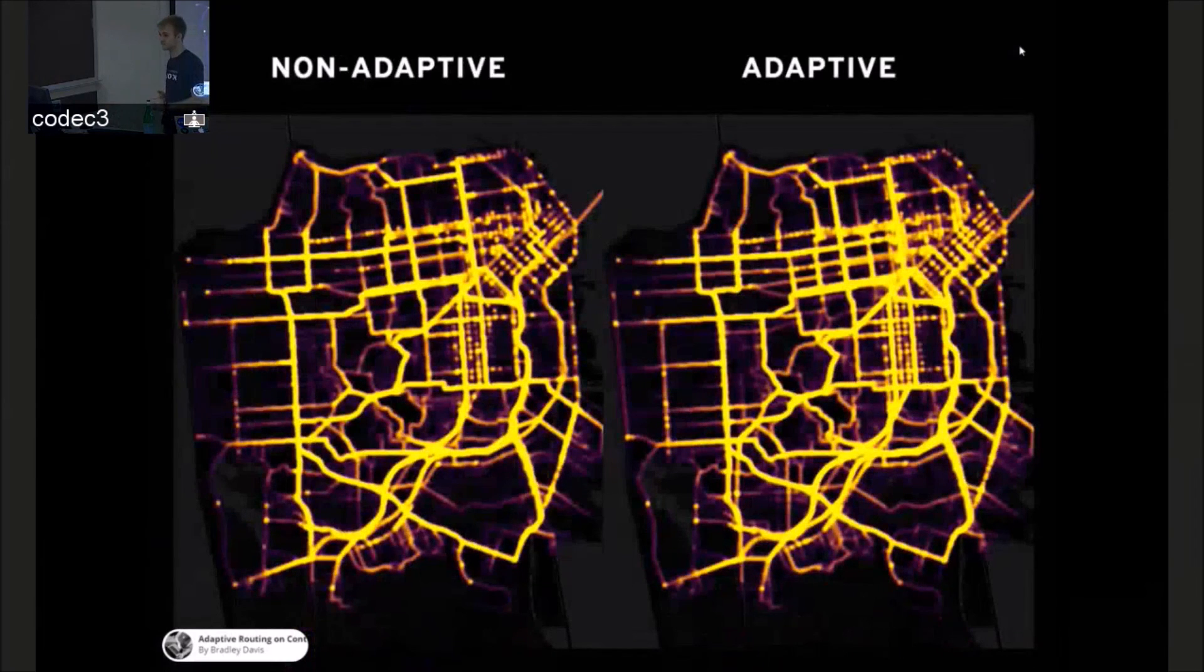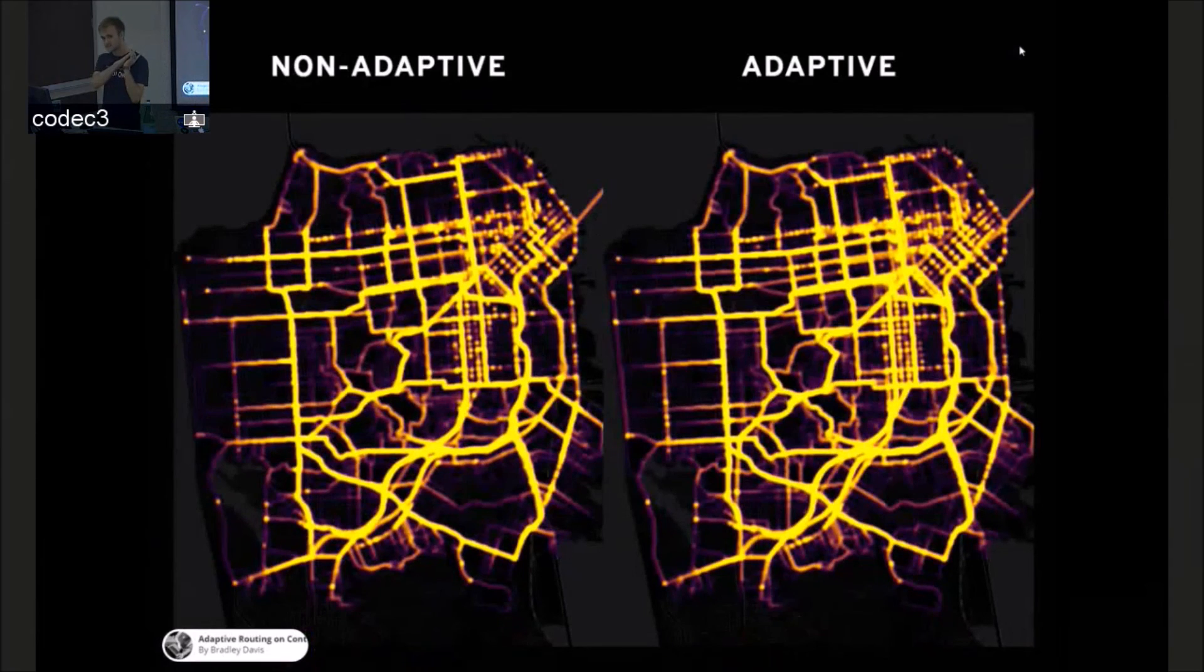So I ran the same thing on all of San Francisco with 10,000 cars. And here's a heat map of the results. And they look pretty similar, one, because there's not really good resolution on the heat map. But you might notice, if you take a look at this road, in the non-adaptive, and over there, you'll notice that the adaptive increases the utilization of secondary roads. And that's a good thing, so long as we don't flood the secondary roads and create more traffic.